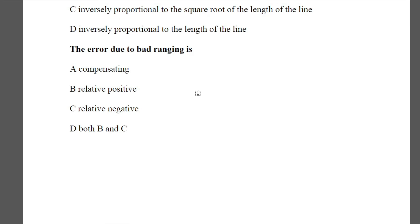Question 16: The error due to bad ranging is — Option A: compensating, Option B: always positive, Option C: always negative, Option D: both B and C. The answer is B — always positive (relative positive).